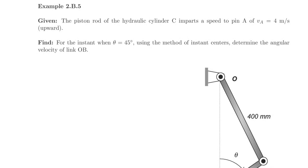Okay, so in this example we have a little piston rod system here, and we're told that the piston rod of the hydraulic cylinder imparts a speed to pin A, which is oriented upward. Based on that information, when the angle theta is equal to 45 degrees, we're asked to use the method of instant centers to determine the angular velocity of link OB.